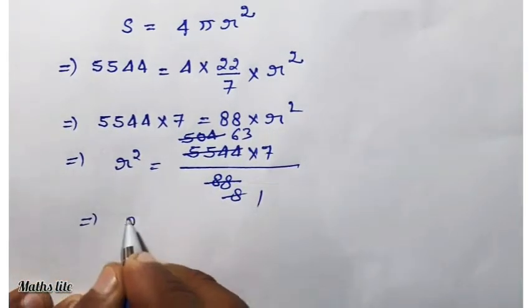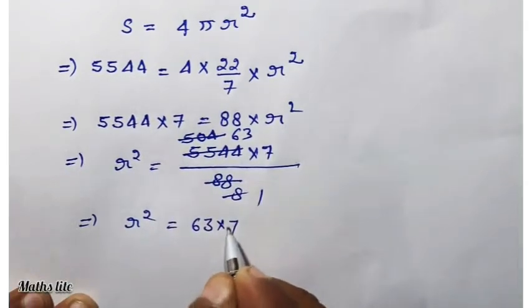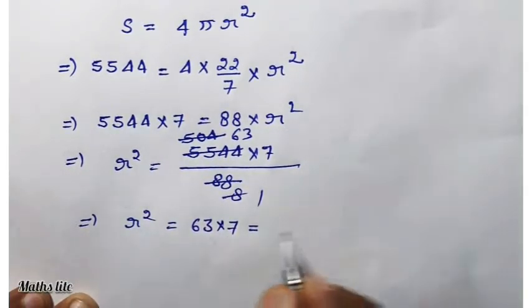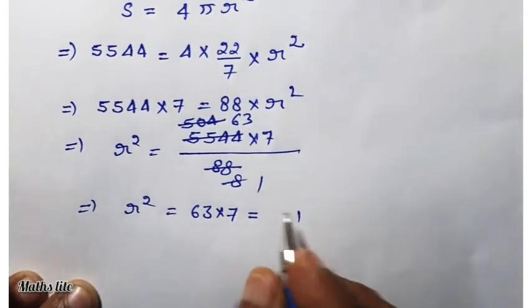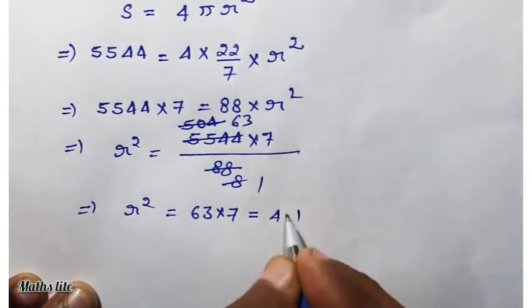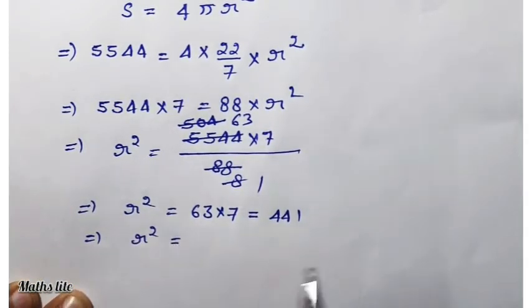Implies that R square equals 63 times 7. Multiply: 7 times 3 is 21, 7 times 6 is 42 plus 2 is 44. Implies that R square equals 441.